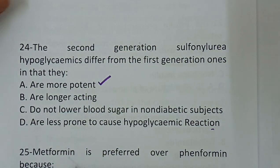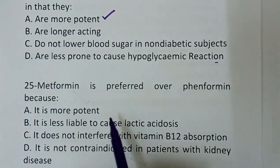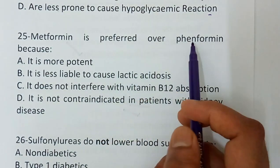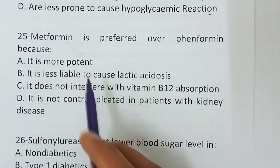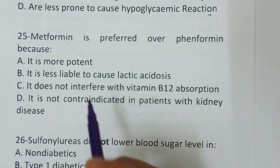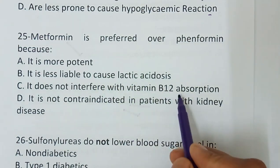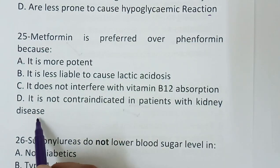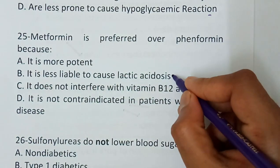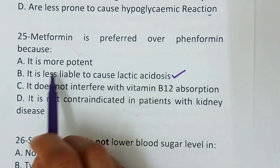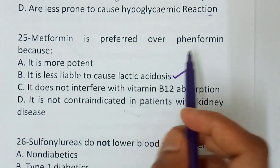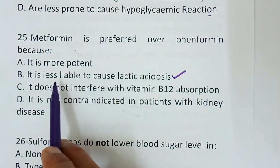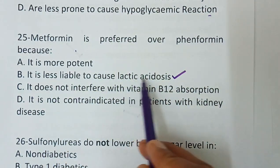Question number 25 — metformin is preferred over phenformin because: option A, it is more potent; option B, it is less liable to cause lactic acidosis; option C, it does not interfere with vitamin B12 absorption; option D, it is not contraindicated in patients with kidney disease. The correct answer is option B — it is less liable to cause lactic acidosis. Phenformin causes lactic acidosis, so metformin is preferred.